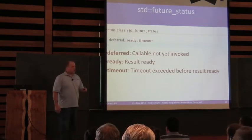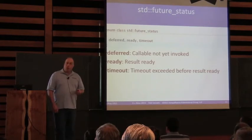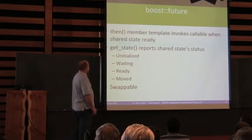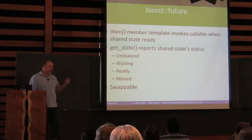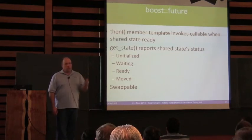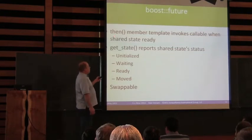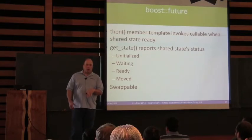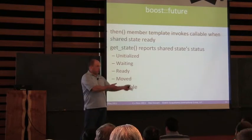Boost::future has a couple of variations. It has a continuation notion — there's work being done to add this to C++14. The idea is you can provide another callable that will be invoked when the result is ready, so automatically, without you having to call get and then queue up another callable. This then-continuation is being contemplated as part of C++17 in a TS. The callback is invoked in the asynchronous thread, not the caller's thread.